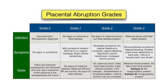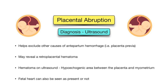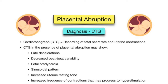Diagnosis of placental abruption is primarily clinical, based on history taking and clinical examination. Findings include vaginal bleeding, pain, and fetal distress on external fetal monitoring. Ultrasound can be used to rule out placenta previa. Blood work including a complete blood count, hemoglobin levels, and clotting factors should also be checked.